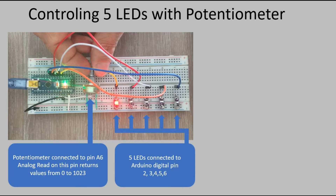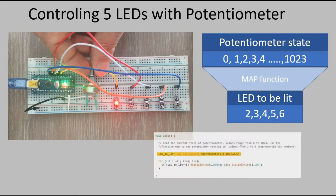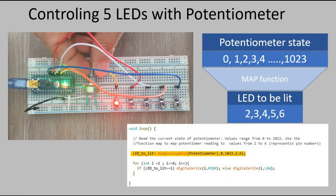I used the Arduino map function to take the value range of a potentiometer, which in normal circumstances is from 0 to 1023, and map it to the LED pin number range, which is from 2 to 6. This way we were able to determine which LED should be lit corresponding to the current potentiometer position. Yet something was not working as expected. I ultimately fixed the problem — it was easy, but I thought this would be a perfect opportunity to create a video showing how you can use the serial monitor to troubleshoot your Arduino sketches.